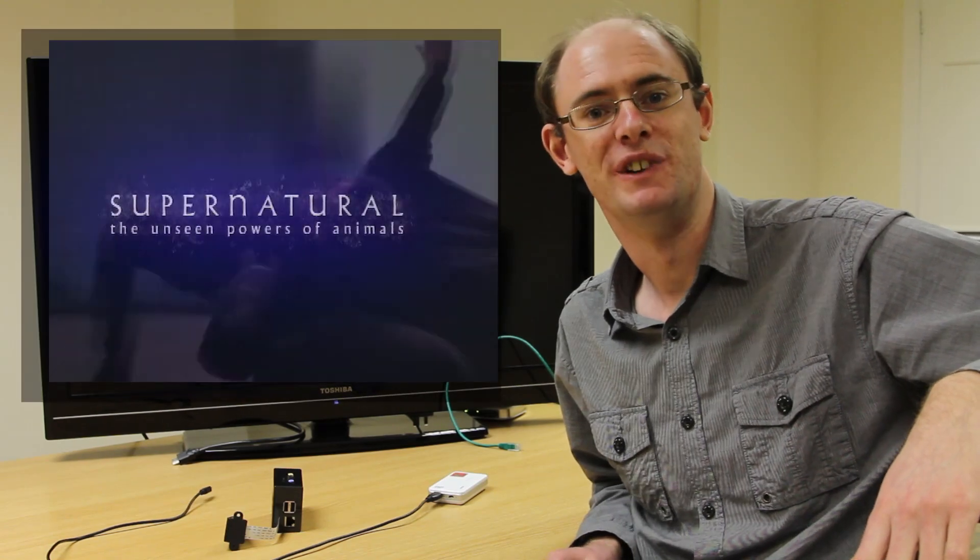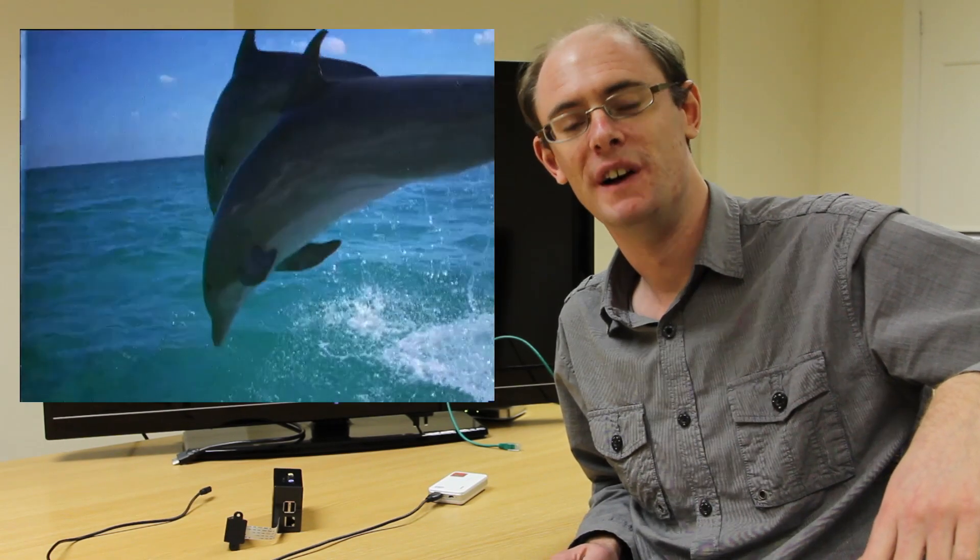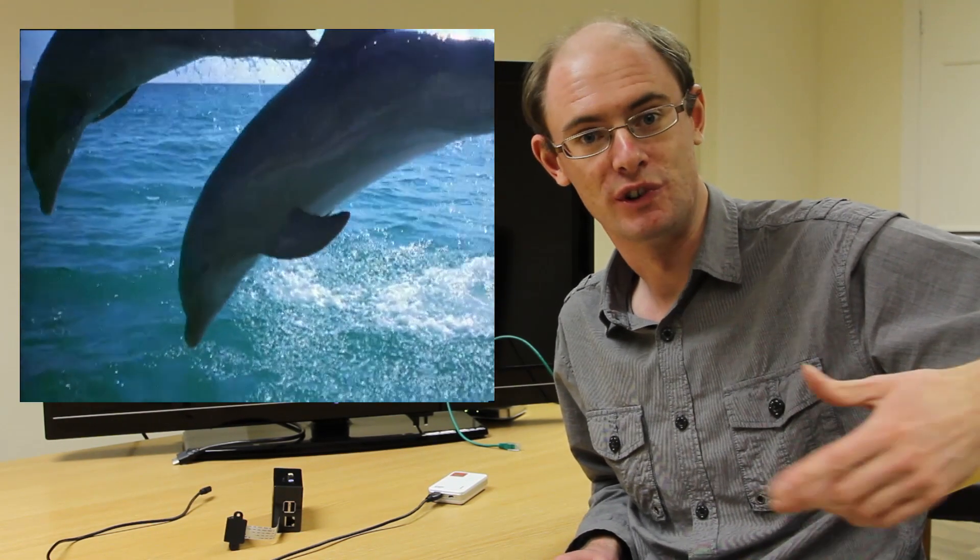I remember seeing The Matrix and the BBC program called SuperSense when I was younger, and I was amazed by this effect they had which was bullet time or frozen time, time slice. What that does is enable you to freeze the action and see around a scene from different angles but frozen in time.